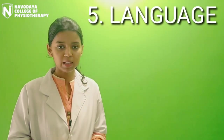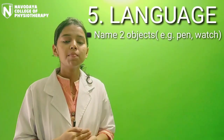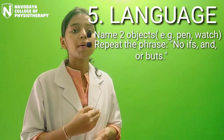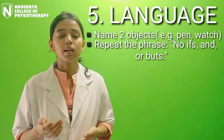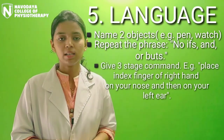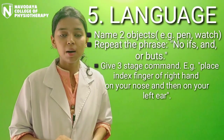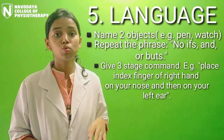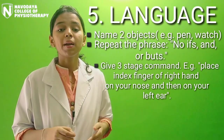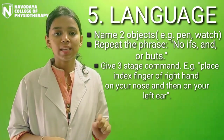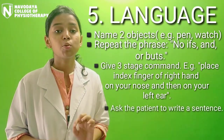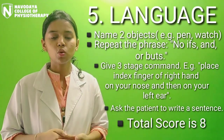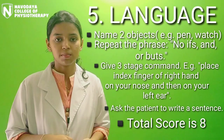In Language, there are multiple commands — for example, name any two objects such as pen and paper. Then commands are given like: place your index finger on your right ear. A written command can also be given on paper and the patient is asked to do the same. The patient can also be asked to write a sentence; if the sentence makes proper sense, the patient scores 1. The total scoring for Language is 8.